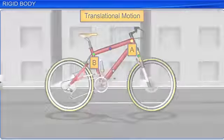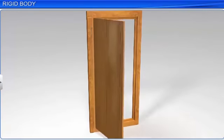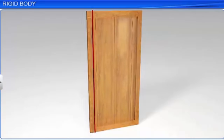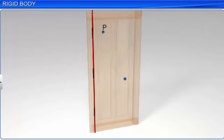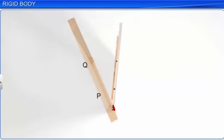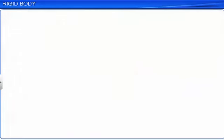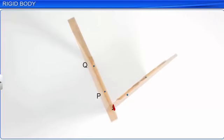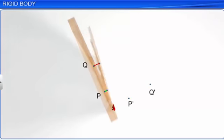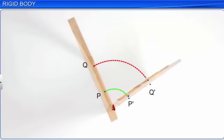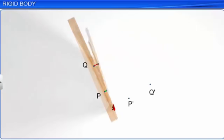Let us consider another rigid body — a door. Mark two points P and Q on the door and observe their motions as the door is opened or closed. When the door is in motion, do the two points P and Q have the same displacement? Their displacements are not equal. Hence, the motion of the door is not translational. This is known as rotational motion of a rigid body.